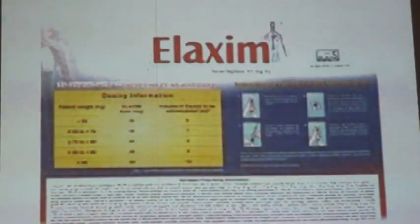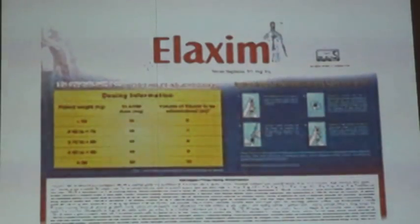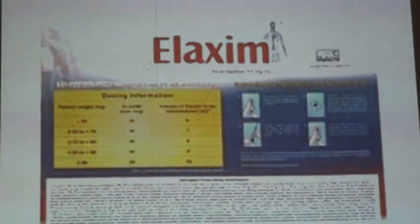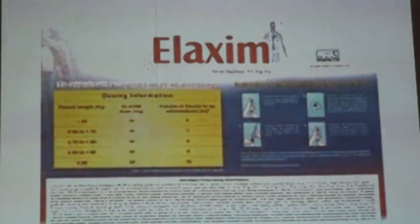New drugs have arrived. Now there is tenecteplase - also called eneciase - and this drug is used for heart attack. Whereas the earlier drug was given over one hour, this should be given in just 15 seconds - just push it. That means if given within 15 seconds, your thrombolytic process will happen. So do not wait for one hour, just push it. This new drug is 40 milligrams dosed according to body weight. Tenecteplase is the new type of thrombolytic, which is given in 15 seconds for heart attack.